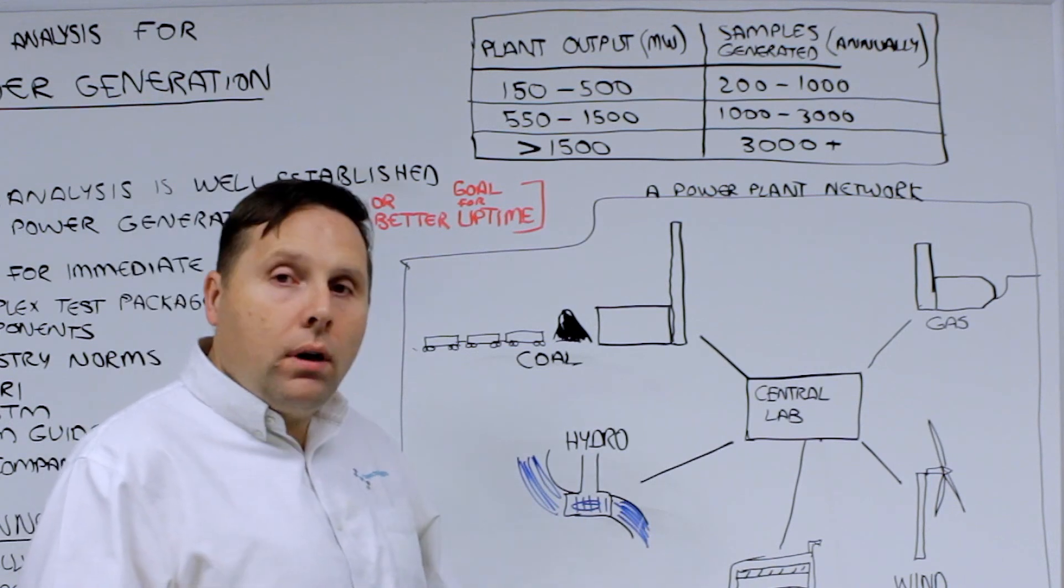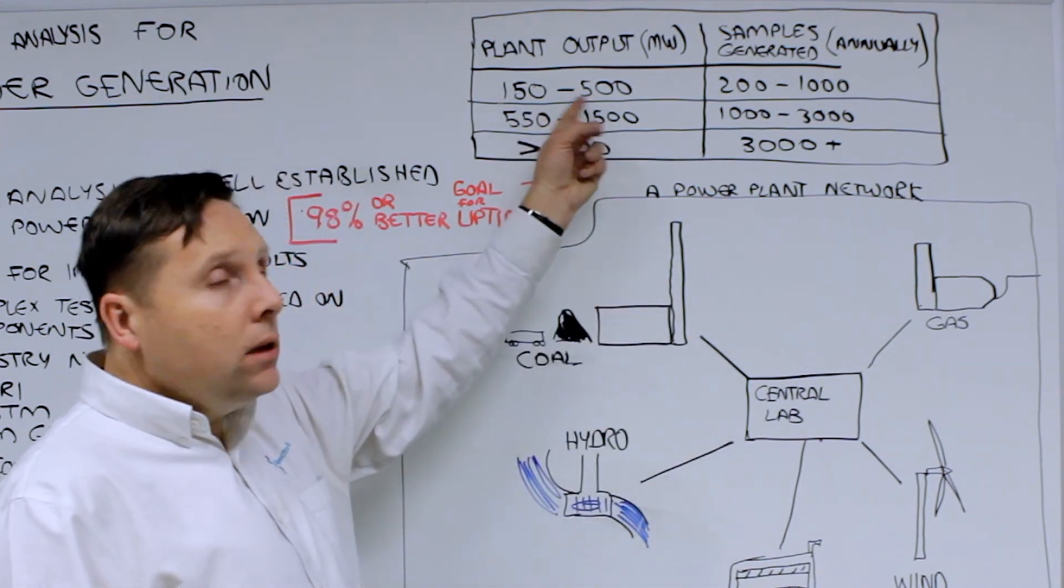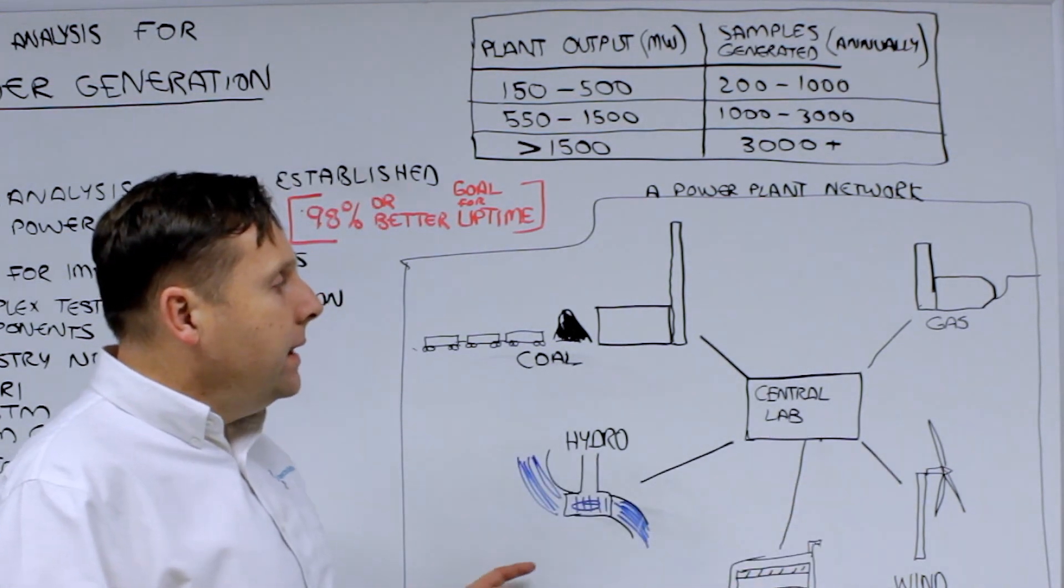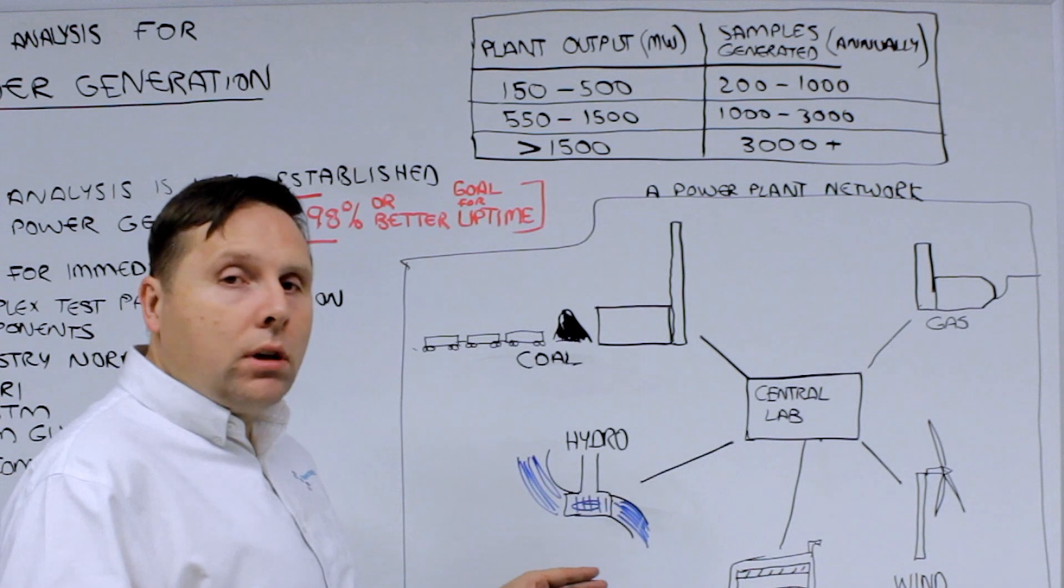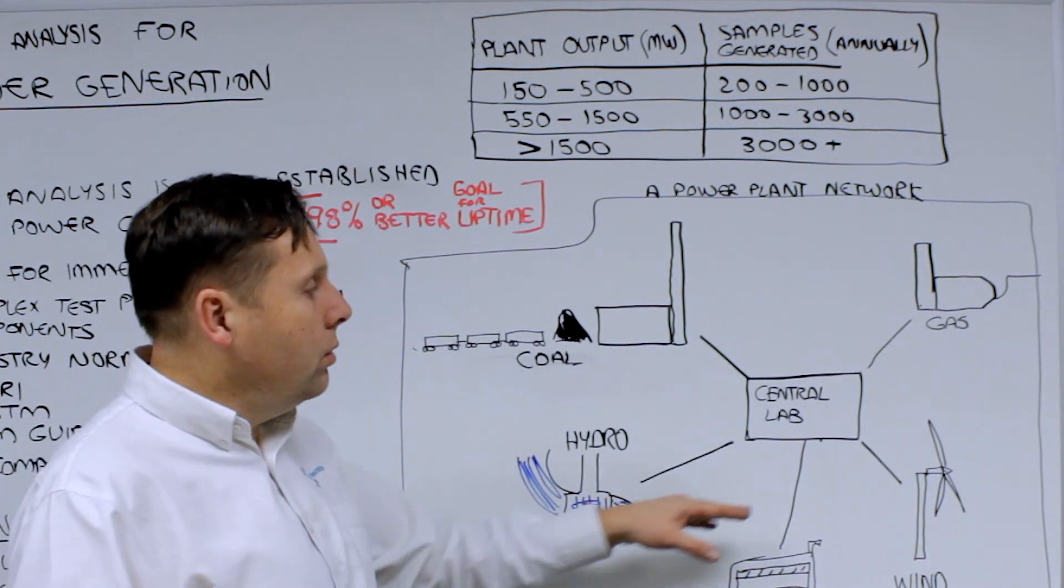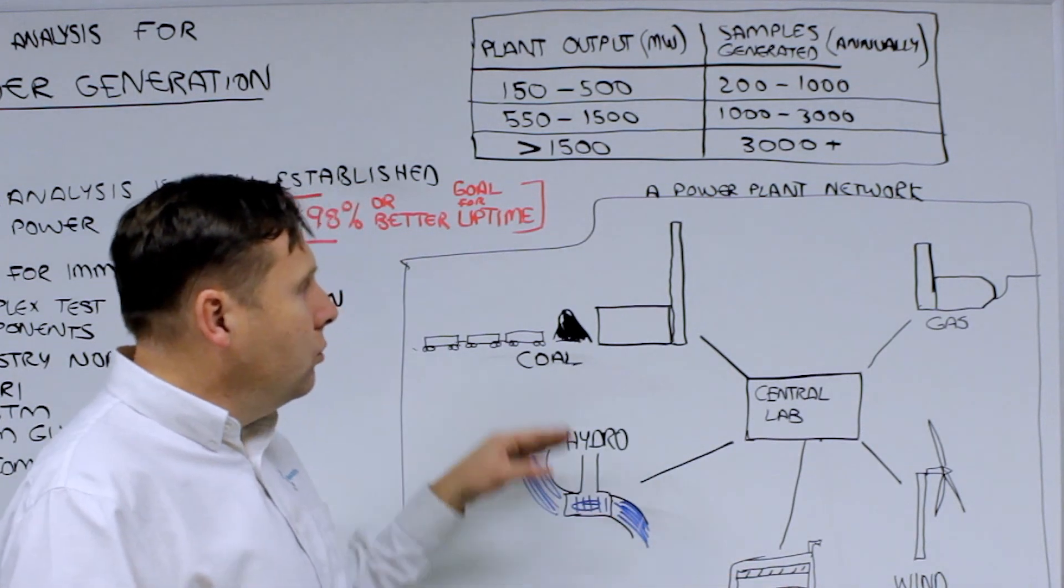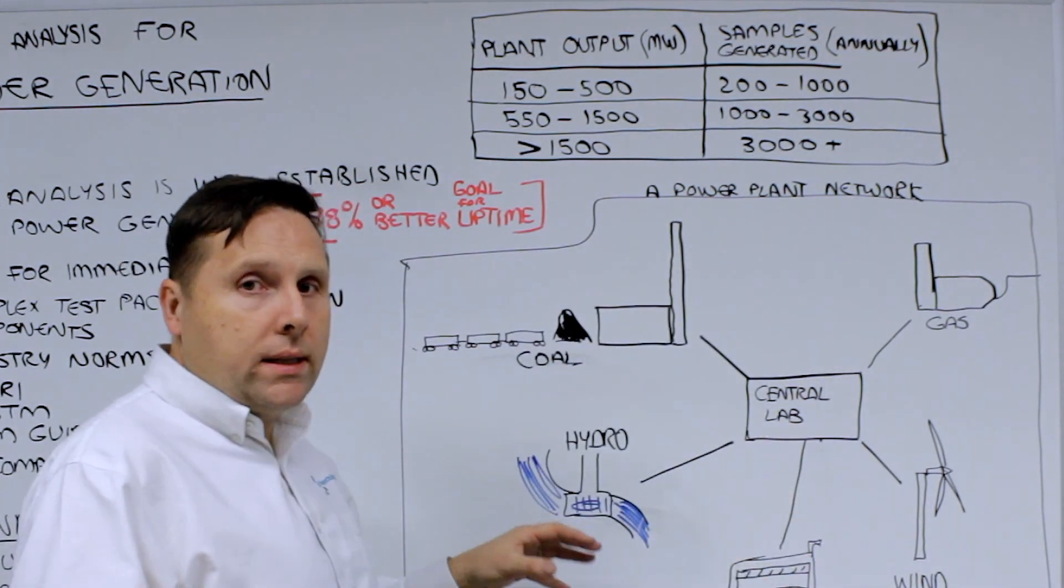For sites that have a variety of smaller, less than 150 megawatts, but are distributed in a lot of different areas, they may be served by a central lab. And it's not uncommon to have a hybrid solution where you have a central lab with traditional lab equipment, and then individual locations having their own on-site solution.